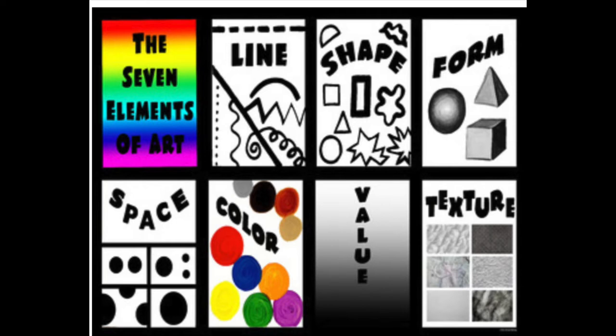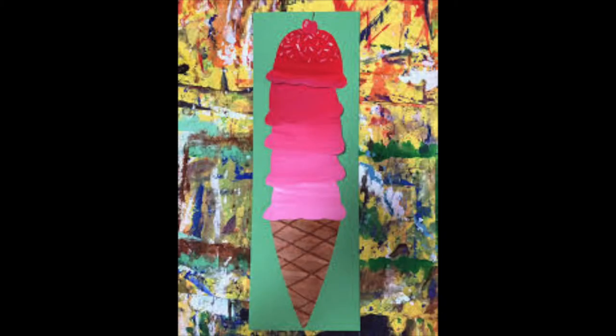You've already looked at value as a first grader when we painted our ice cream cones. Here's a picture of our value ice cream cones in case you forget. Our value ice cream cones go from light to dark. Remember, we had three or four or two scoops of ice cream, however many you chose, and you had to paint one light, one a little bit darker, and then one the actual color that you were using.